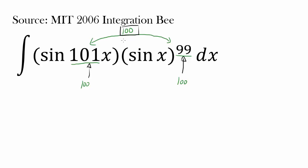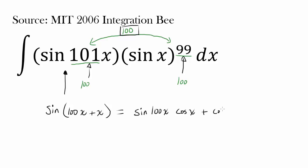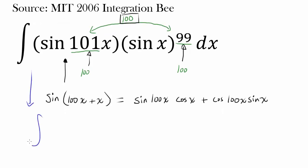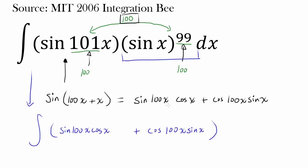One way to try this is to split sine of 101x into sine of (100x + x), and using the trig identity this is the same as sine of 100x times cosine of x plus cosine of 100x times sine of x. So instead of sine of 101x we now write sine of 100x times cosine of x plus cosine of 100x times sine of x, and to this we multiply by sine of x to the 99th power. Distributing, sine of x to the 99th power goes into the first term, and the second term already has one sine of x so we get sine of x to the 100th power.